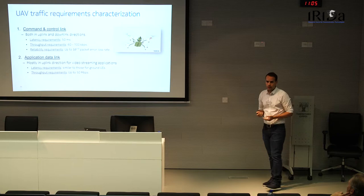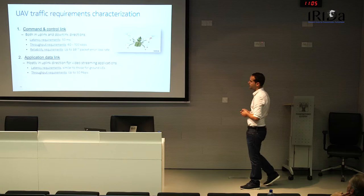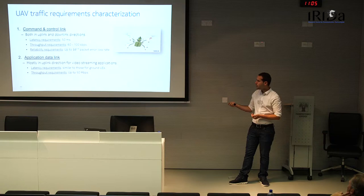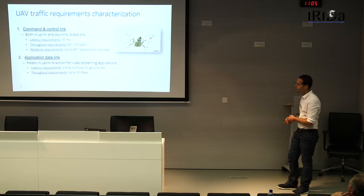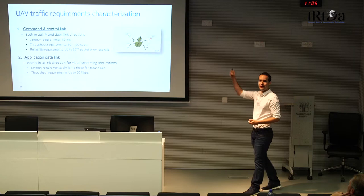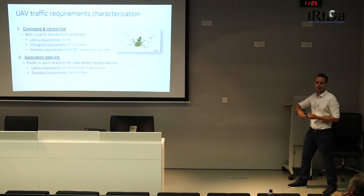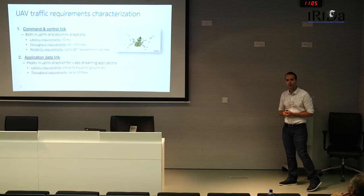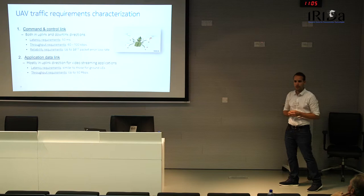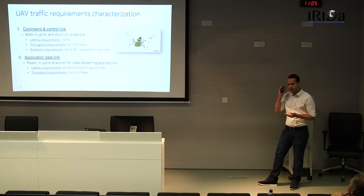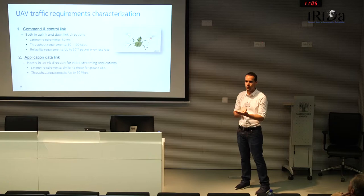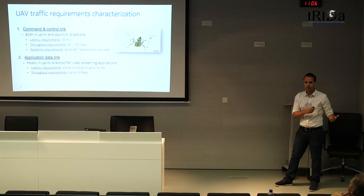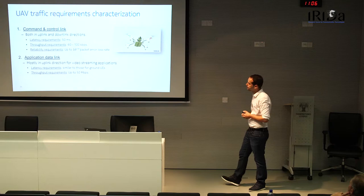The second type is the application data link. 3GPP agreed that most UAVs will be used for video-related applications — either a consumer flying a drone recording scenery or the police use case. Latency requirements are similar to ground users, but there are high uplink throughput requirements up to 15 Mbps. Notably, ground cellular networks are typically downlink-heavy, whereas for UAVs it's the opposite — they stream data in the uplink direction.